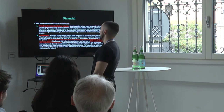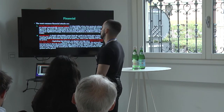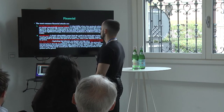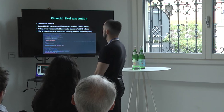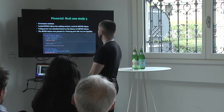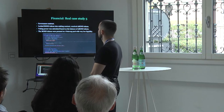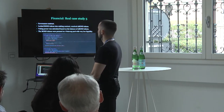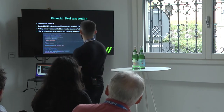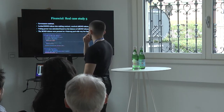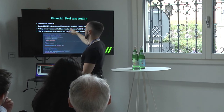Now let's speak about financial attacks. The most common are oracle price manipulation attacks, and we could also include flash loans. Here's an audit I did a few months ago — a governance smart contract where people could create proposals. The voting power for proposals was calculated based on the balance of xBOND tokens. To get xBOND tokens, users could stake BOND tokens in a staking contract and receive xBOND tokens in return.